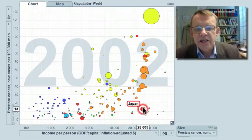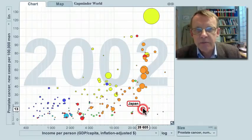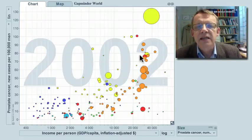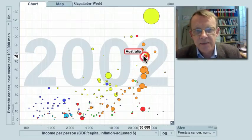And look here. In Japan, the risk of getting prostate cancer is much lower than it is in Australia, which has the same income.